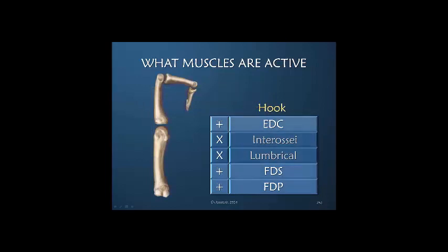The active hook position. All of the extrinsics are active. EDC is extending the MP joint, FDS-FDP the IP joints, but the lumbrical and interossei are relaxed and are actually elongated.